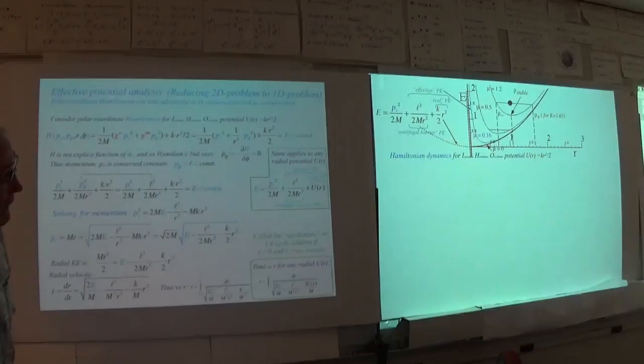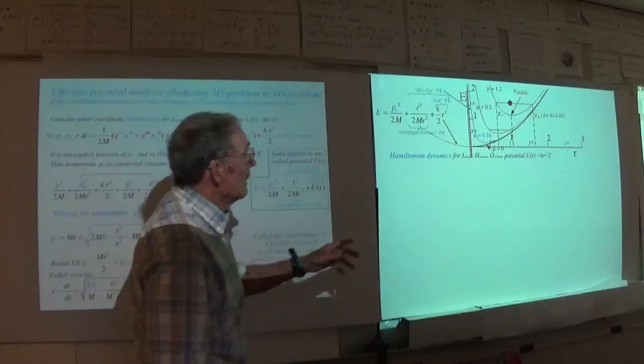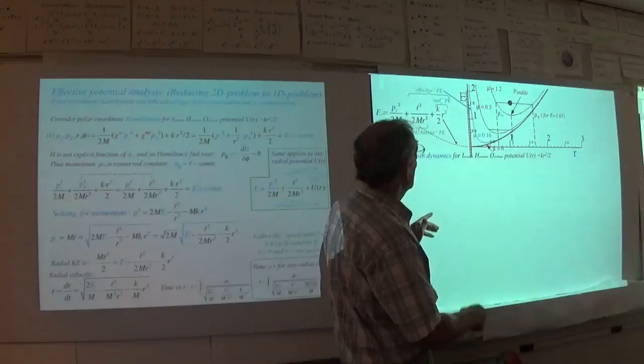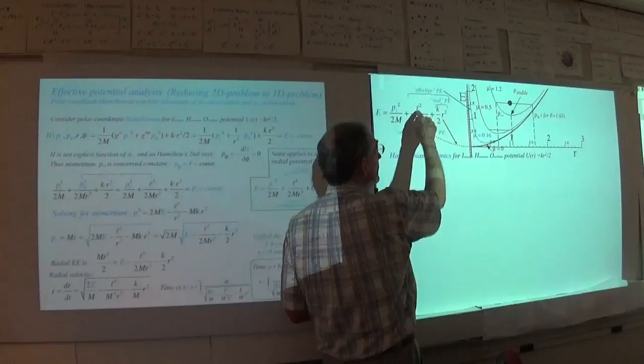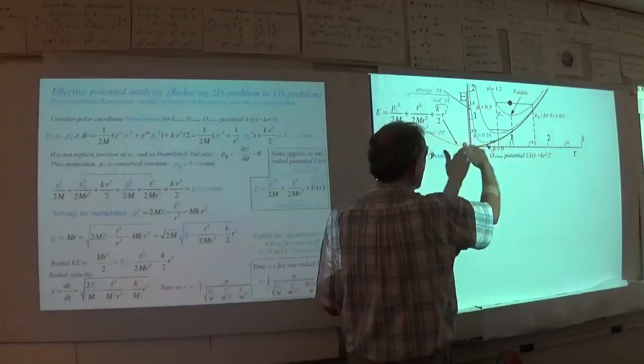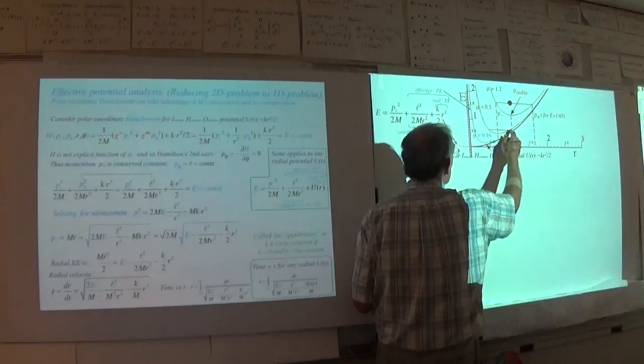Now what we're going to look at is the sophomore physics inside-the-Earth part of this — that is, Hamiltonian dynamics for the isotropic harmonic oscillator. This potential, K R-squared over 2, is this parabola right here. And added to it depends on how much L-squared you're allowed to have. If L-squared is zero, you just do the old thing with a parabola and a simple oscillator mechanics.